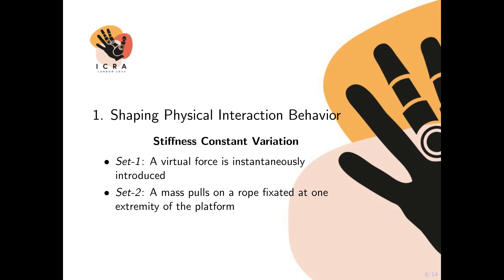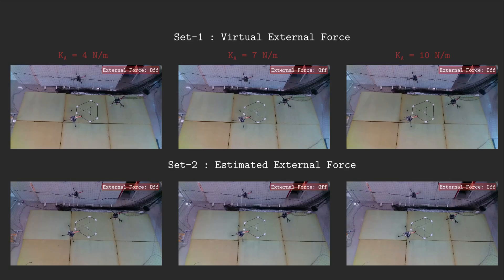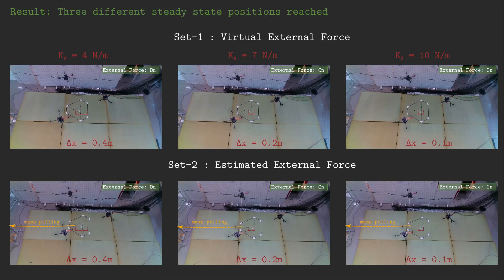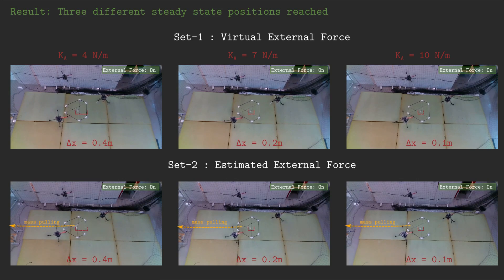In set one, an instantaneous virtual force is introduced, whereas in set two a mass pulse on a rope is fixed at one extremity of the platform. As can be seen in the videos, the admittance scheme suitably performs at steady state, where the position of the platform remains close to the nominal one according to the corresponding stiffness value. The displacement is shown in red.